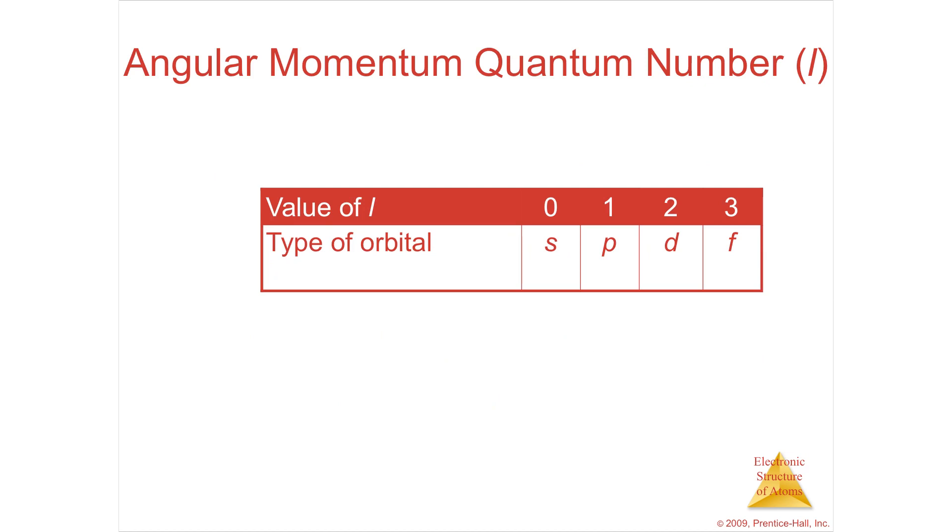And your angular momentum quantum number tells you which subshell that your electron lives in. Because really, all these quantum numbers are telling you your address. So here it is. When L equals zero, you have one subshell called the S. If L equals one, this is the angular quantum number, this is your second number. So your first number was N. N equals one, two, three, four. Your second angular momentum quantum number is L. When L is zero, you've got one subshell that's an S. When L is one, you've got two subshells, S and P. When L is two, you have three, S, P, and D. When L equals three, you have four subshells, S, P, D, and F.